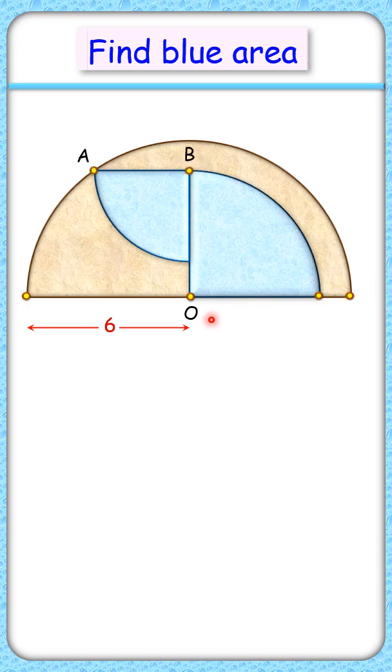Here, let's assume the radius of this quadrant is A centimeters and the other is B centimeters. Let's join AO, which is radius 6 centimeters.